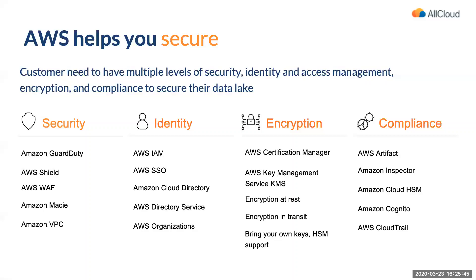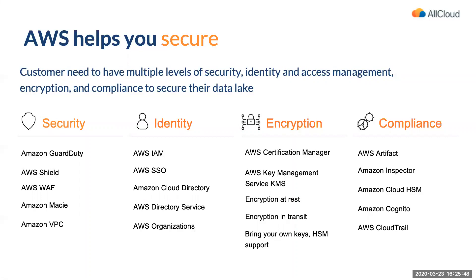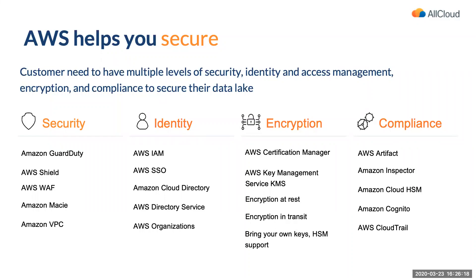Now let's talk about security and governance. AWS provides a diverse portfolio of security, compliance, and governance-focused services and features — over 200 significant services. These include services for establishing and managing federated identity such as AWS IAM, KMS, ACM, and others. Let's focus on two key aspects of data security relevant to the data lake: data storage security and metadata security.